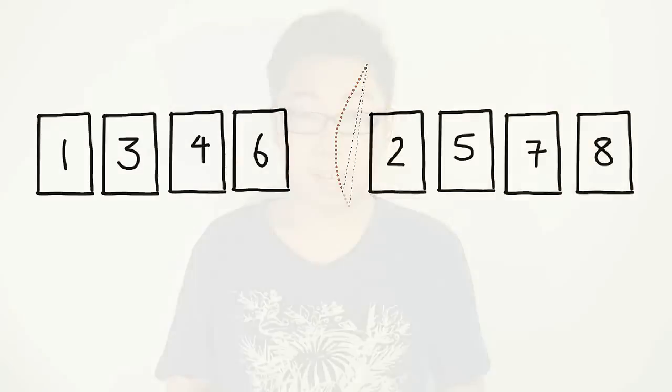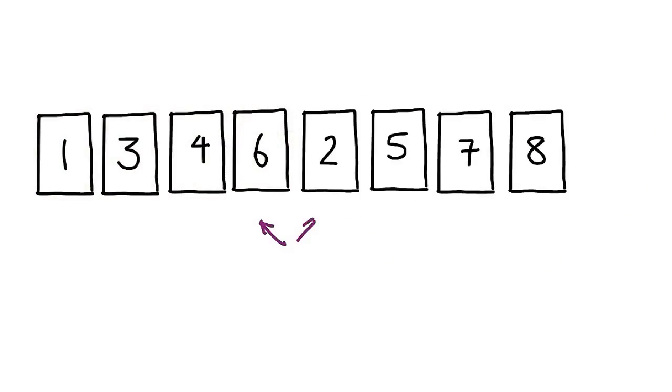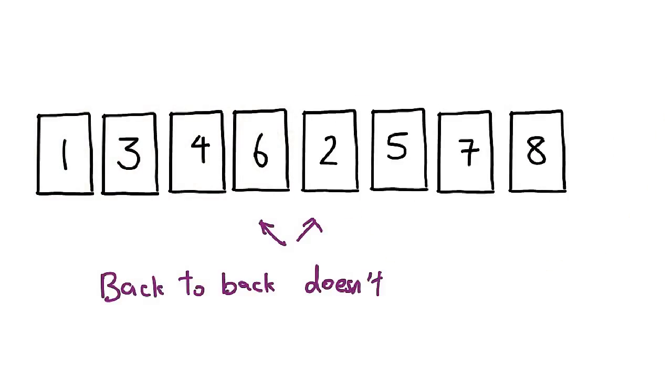Now, obviously, putting them back to back doesn't quite work out, as you can see in this example. Each list is sorted, but if we simply put them back to back, some things become jumbled up. This is when we need to do merging. Merging is a very simple algorithm that selectively pulls items out of the sublist to create a full list that is still sorted.